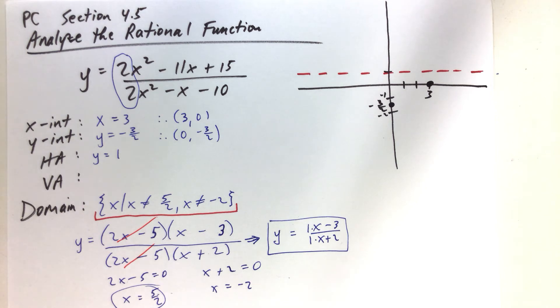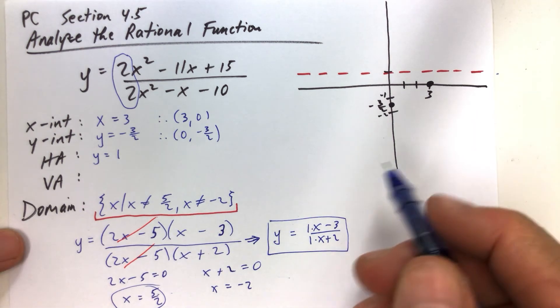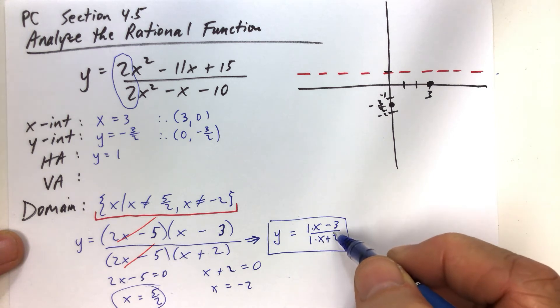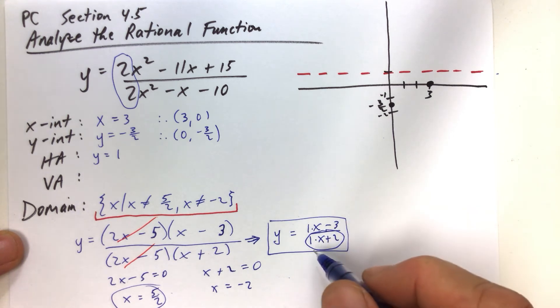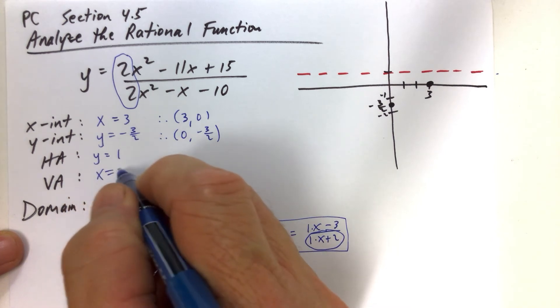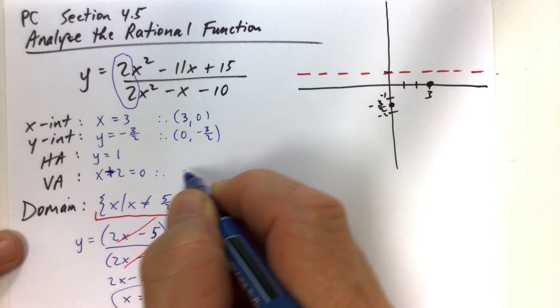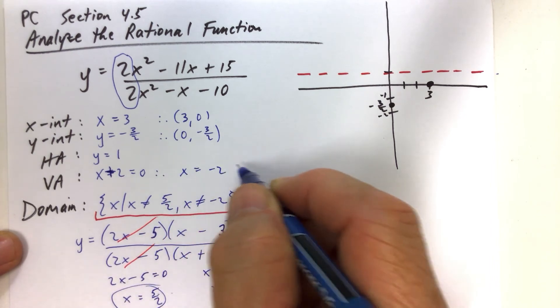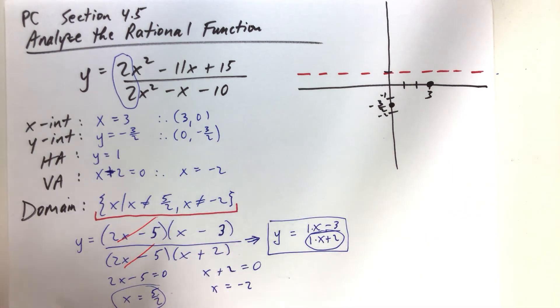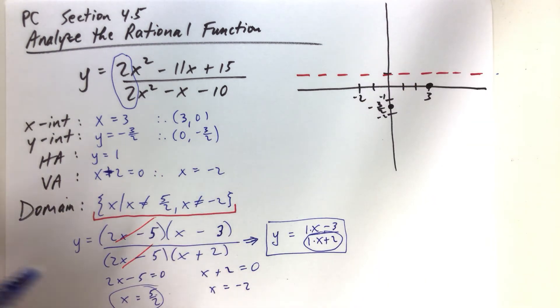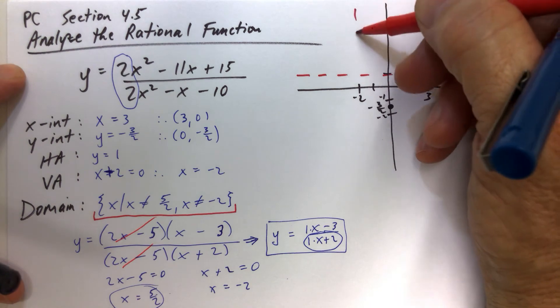And then vertical asymptotes. Now, vertical asymptotes are found when you set the denominator equal to 0. So whatever number, whatever x makes the denominator 0 in the reduced form. So the reduced form is when you have an x plus 2 down here. So x plus 2 equaling 0. x plus 2 equals 0. Therefore, x equals negative 2. So x equals negative 2 is our vertical asymptote. Negative 2 there. And we have our vertical asymptote.